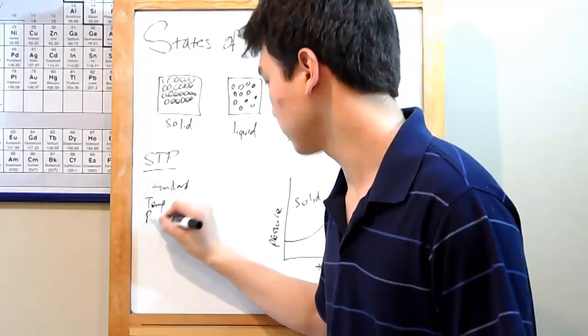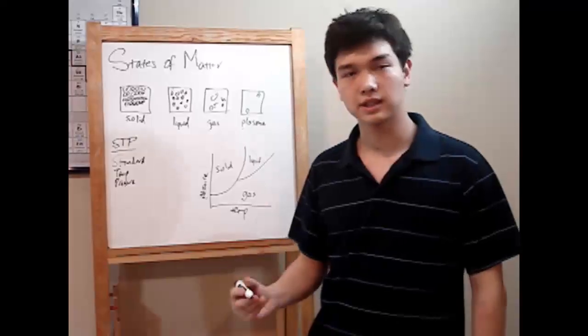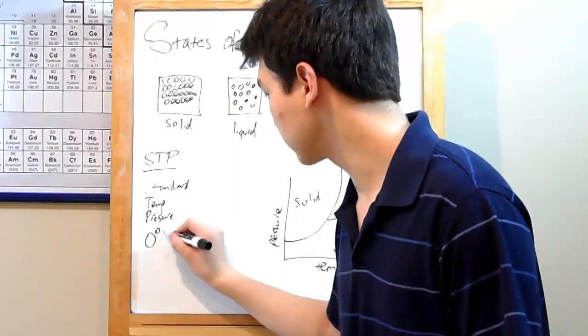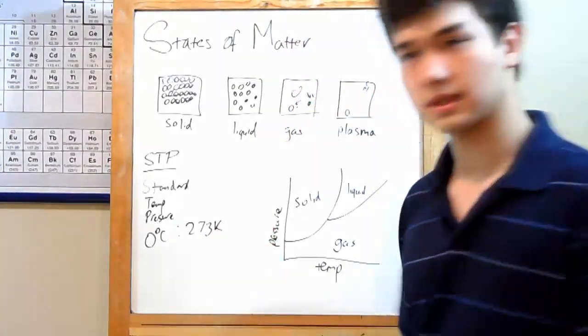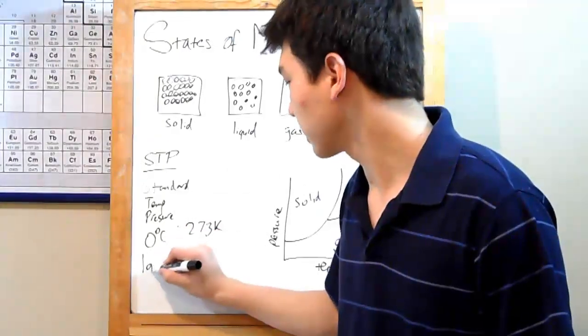And what exactly is standard temperature and pressure? Well, your standard temperature is zero degrees Celsius, or 273 kelvins. Simple enough. That's when ice forms.